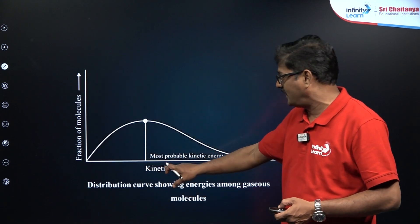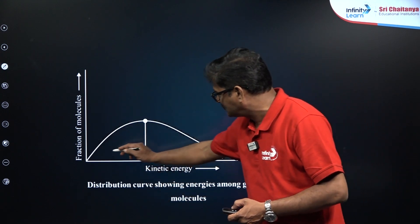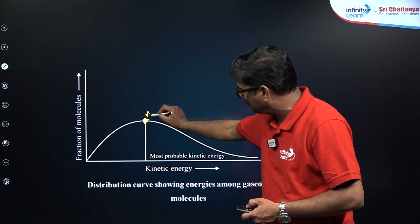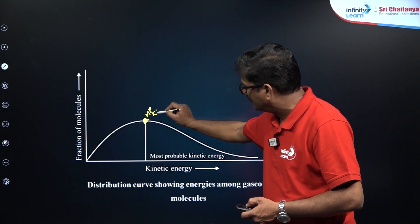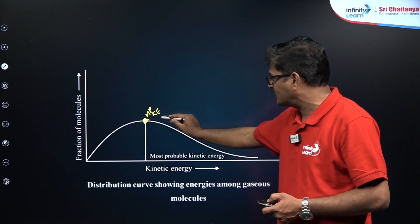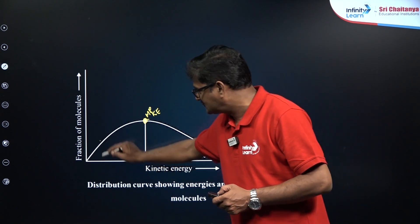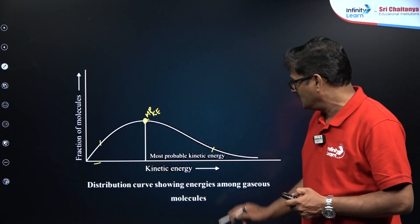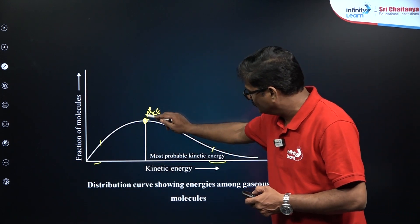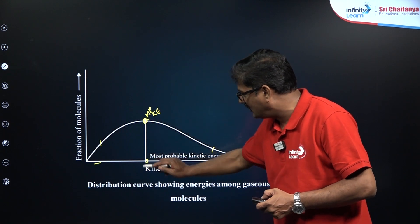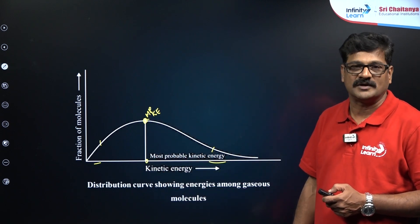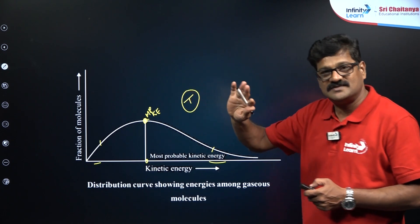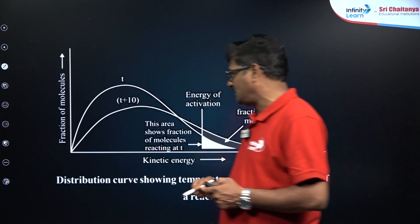According to the Maxwell-Boltzmann molecular distribution curves, on the y-axis we plot the fraction of molecules and on the x-axis kinetic energy. A fraction of molecules has the most probable kinetic energy — the curve rises to a maximum and then decreases. Very few molecules have either very low or very high kinetic energy; most molecules have a certain value called the most probable kinetic energy, at a given temperature.